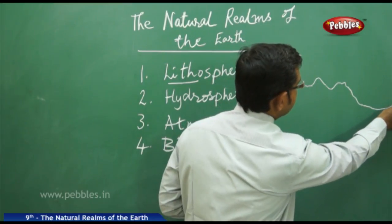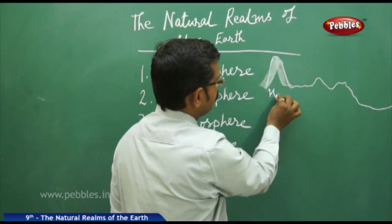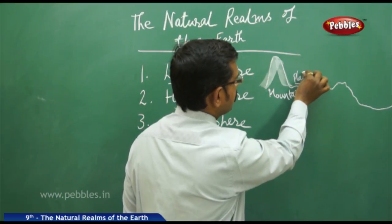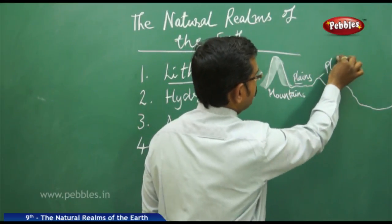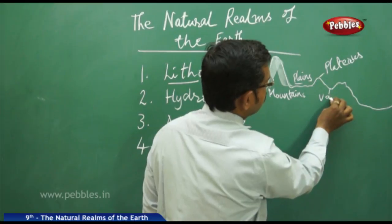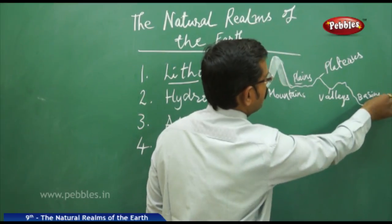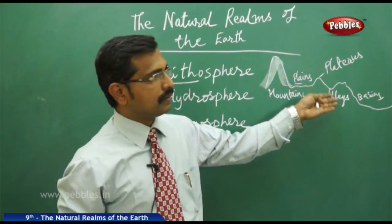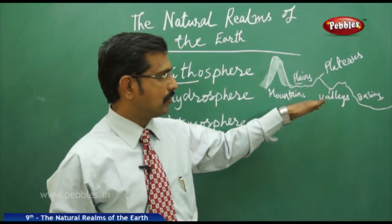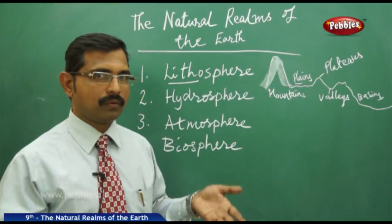Sometimes you have plateaus, deep valleys, and very deep basins. Lithosphere is mainly composed of these features — mountains, plains, plateaus, valleys, and deep basins. Valleys are where rivers flow along their paths, and the huge basins are nothing but the oceans.